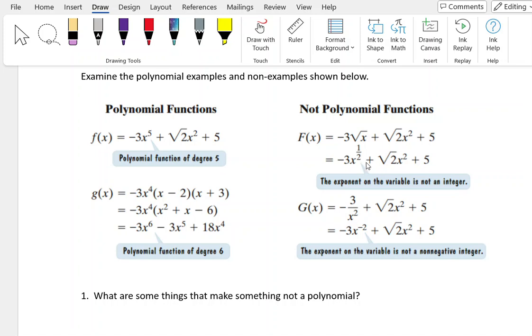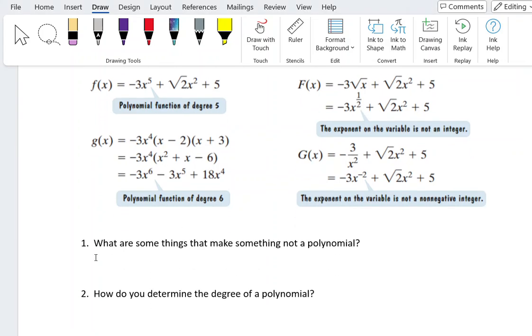It's a fraction, one half. So one thing that makes something not a polynomial is that the exponent is a fraction, or it could also be written this way with the square root on the variable.